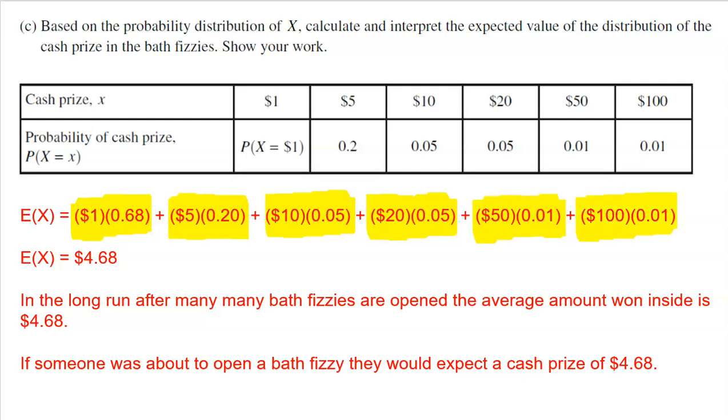And in list one, you would put all the cash prizes: 1, 5, 10, 20, 50, 100. In list two, you'd put the corresponding probabilities: 0.68, 0.2, 0.05, 0.05, 0.01, 0.01. And then you would do a one variable stats, but make sure that the list is your cash prizes and the frequency list underneath it would need to be the proportions that you had in list two. And then when you run that, you'll get the mean or the expected value. Expected value and mean are the exact same thing. So the expected value for X is the same thing as saying the mean of X, would be $4.68. Pretty easy.